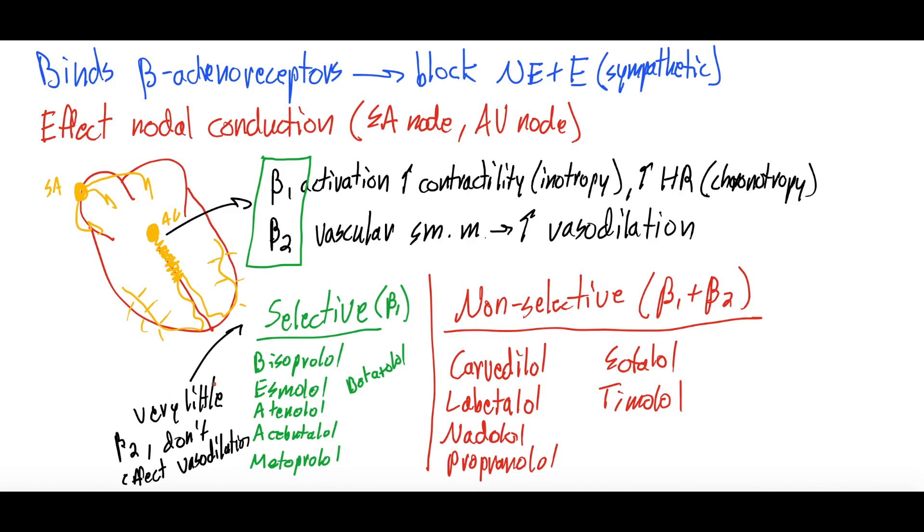Now, don't be mistaken. The selective beta blockers can still affect blood pressure because they're decreasing contractility and heart rate, but they don't have a direct effect on the beta 2 receptors in the vascular smooth muscle like the non-selective beta blockers do.